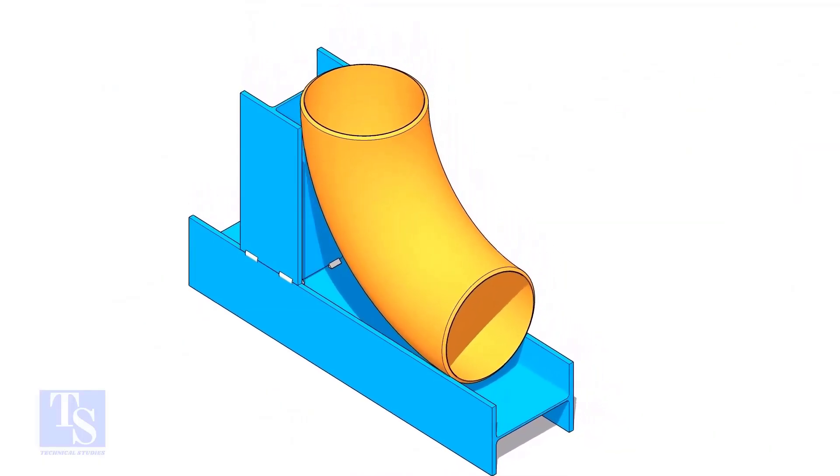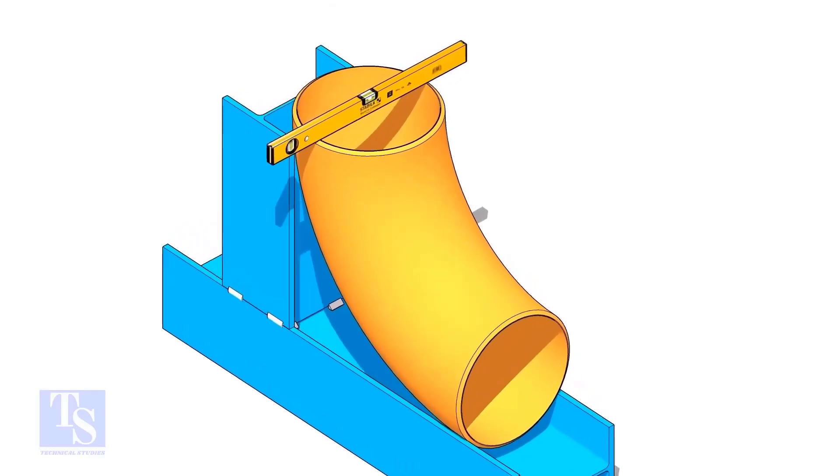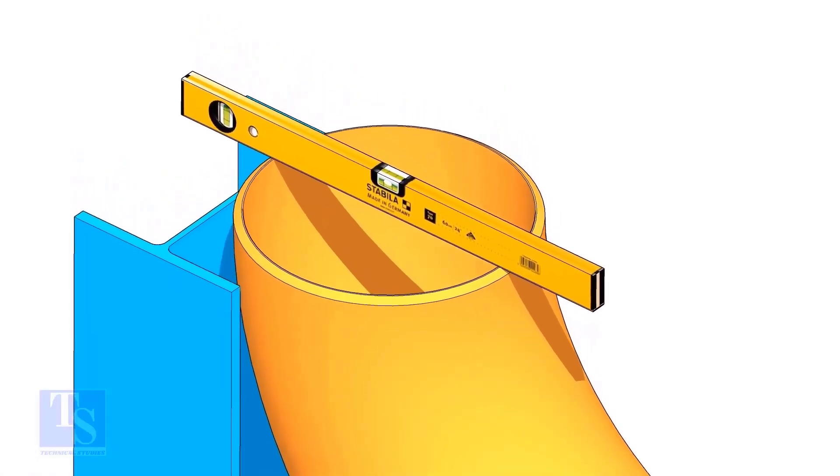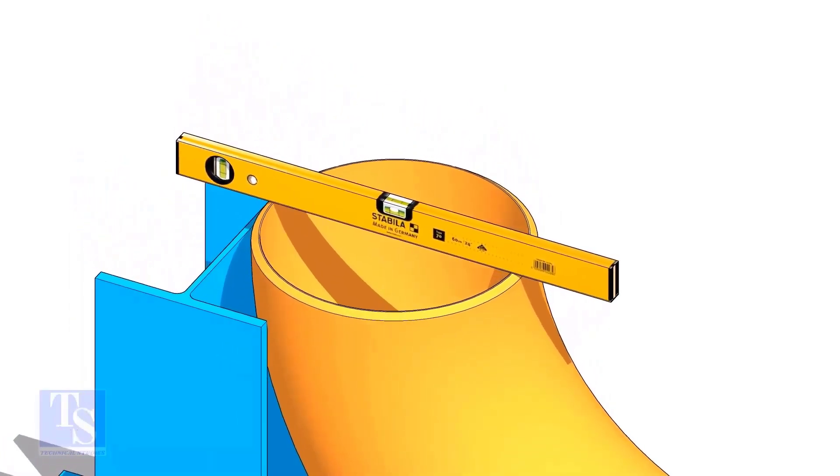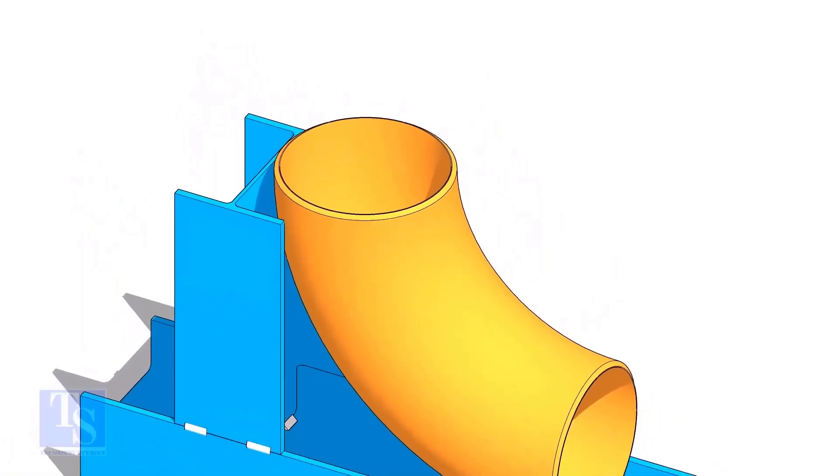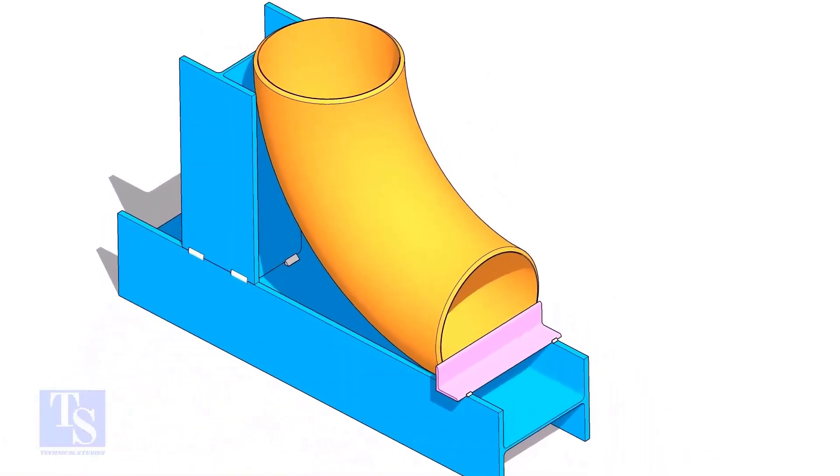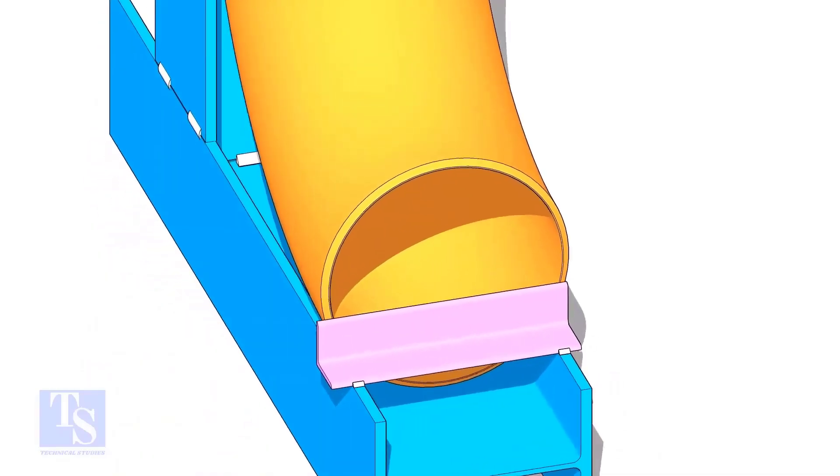Put the elbow in the jig. Level the top face of the elbow on both ways. Tack weld a piece of angle bar or a piece of a plate at the bottom side of the jig to arrest the elbow.